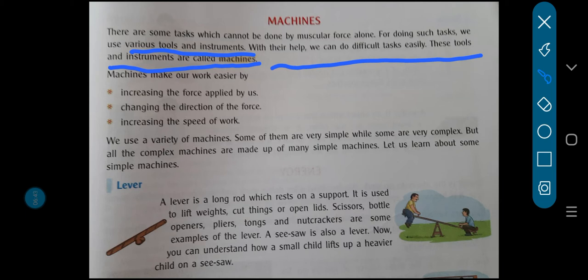For doing such tasks we use various tools and instruments. With their help we can do difficult tasks easily. These tools and instruments are known as machines. Machines make our work easier by increasing the force applied by us, changing the direction of the force, and increasing the speed of the work. We use a variety of machines. Some are very simple while some are very complex, but all complex machines are made up of many simple machines. Let's learn about some simple machines.